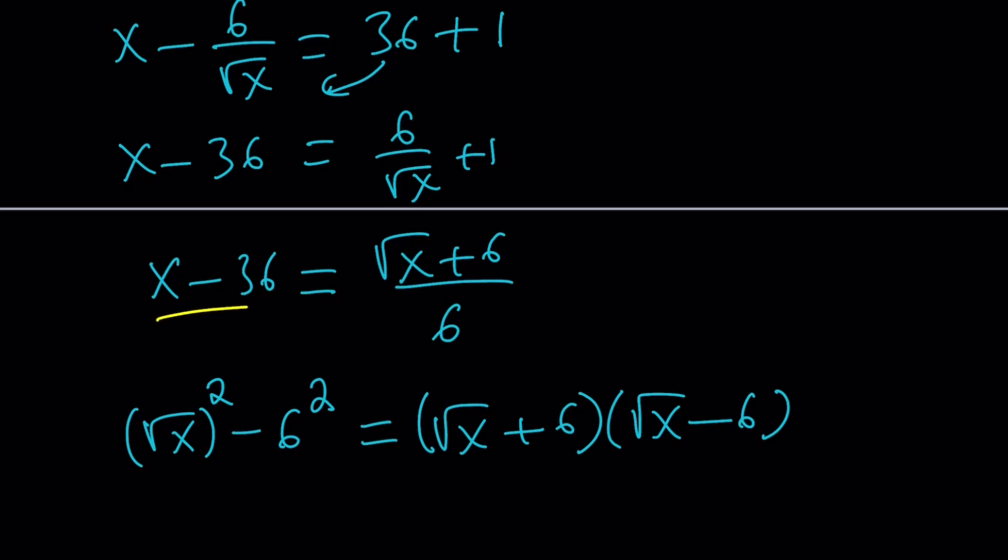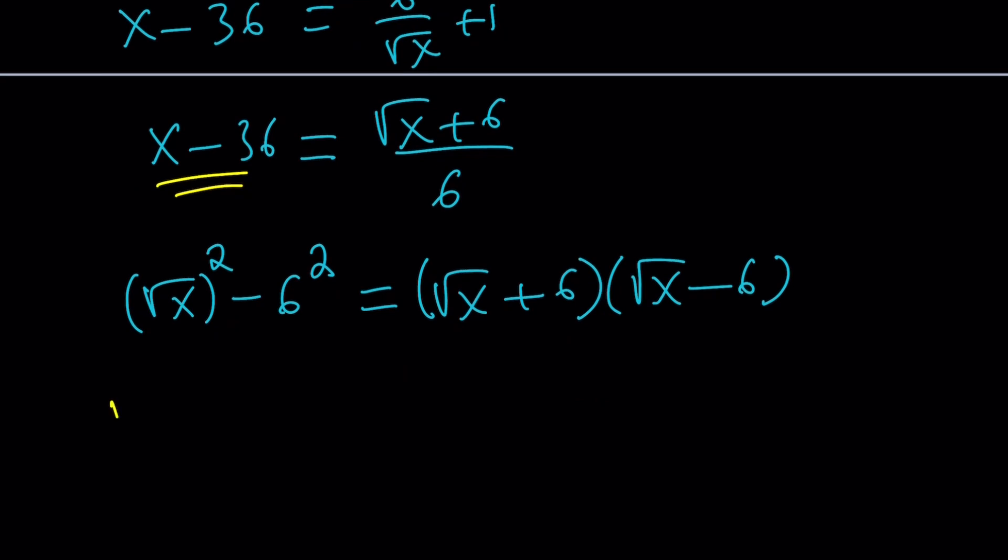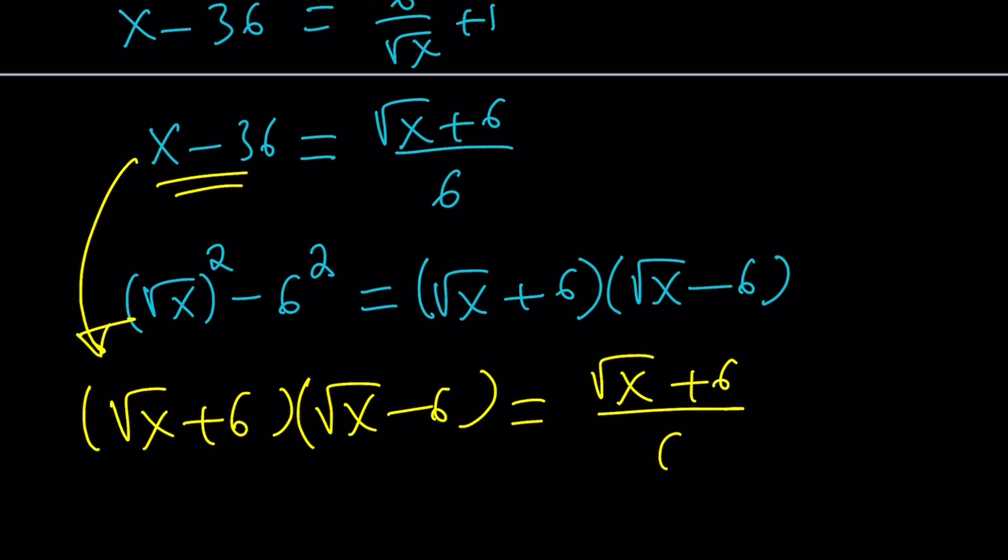Now, we have this for the left-hand side. Let's go ahead and write it. Square root of x plus 6. Let's substitute that here for x minus 36. And on the right-hand side, we have square root of x plus 6, which should be familiar to you, right? Divide by 6. Awesome.